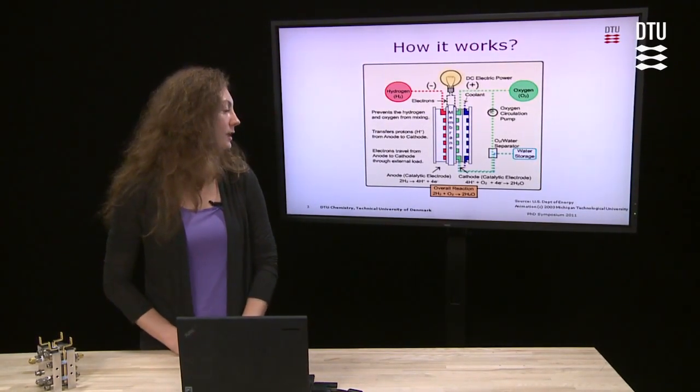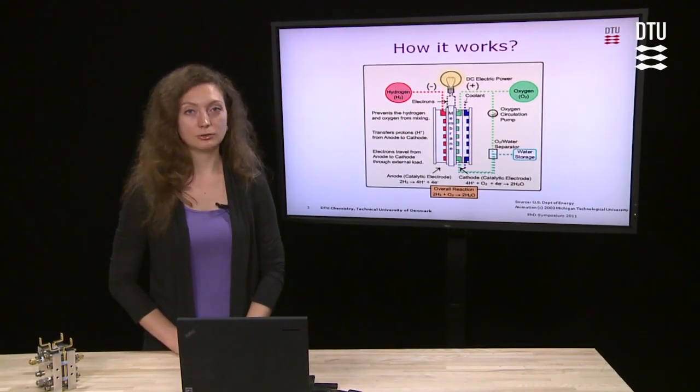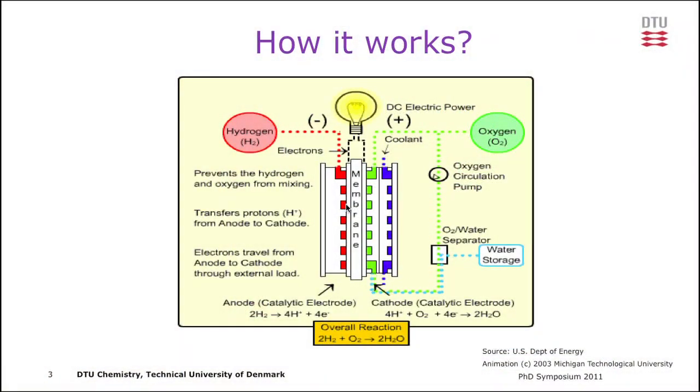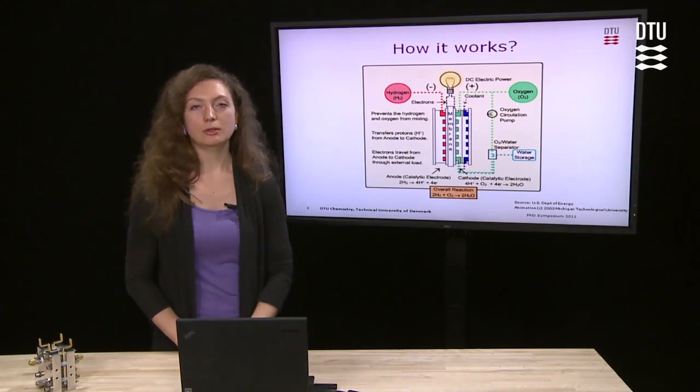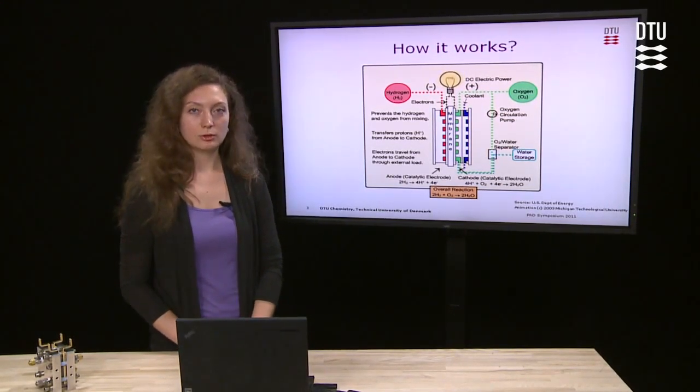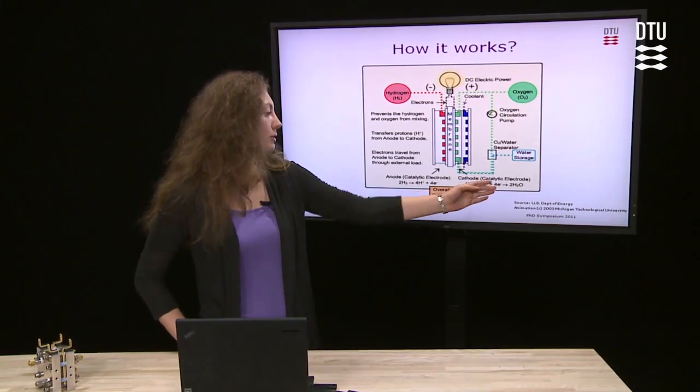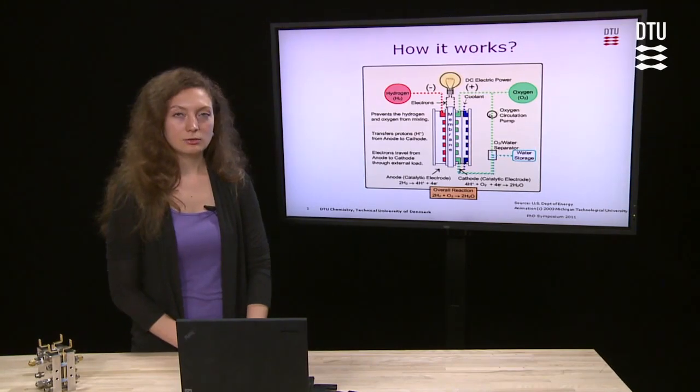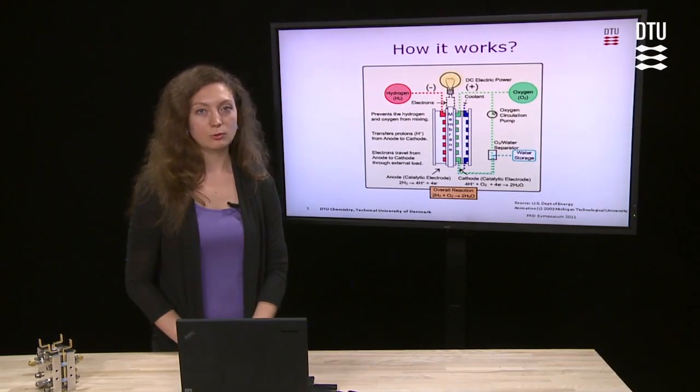At the anode side, hydrogen is split into protons and electrons. Electrons go to the external circuit while protons go through the membrane to meet the electrons and oxygen to produce water. The slow kinetics of the oxygen reduction reaction at the cathode side leads to crucial potential loss in PEM fuel cells.